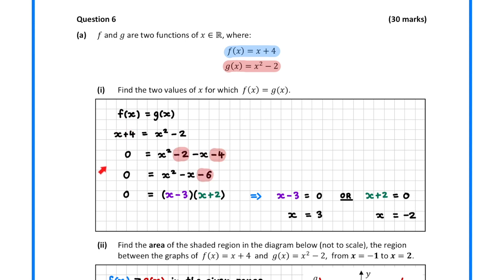We simplify the right hand side and then factorize the resulting quadratic. The only way two numbers can multiply to zero is if one of them is equal to zero.